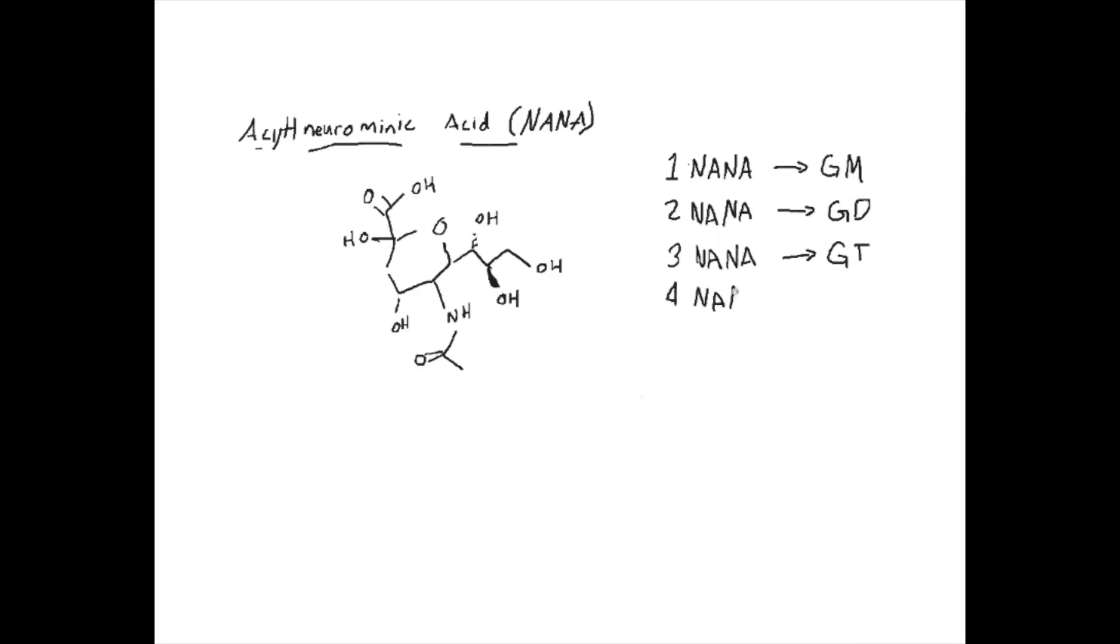Two NANAs is labeled as GD. Three is GT. And four is GQ. The reason is this is mono, di, tri, and quad. So the number of NANAs on your ganglioside is how you name based on this prefix.